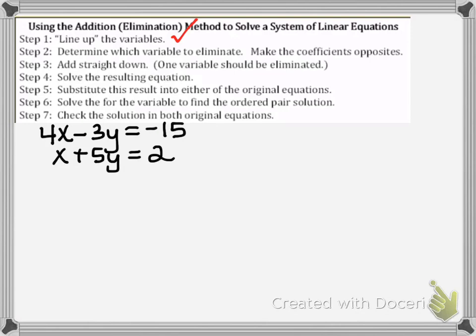We can see the x's are lined up vertically, the y terms are lined up vertically, and the constants on the right side of the equal sign are also lined up vertically. Now we need to determine which variable to eliminate.